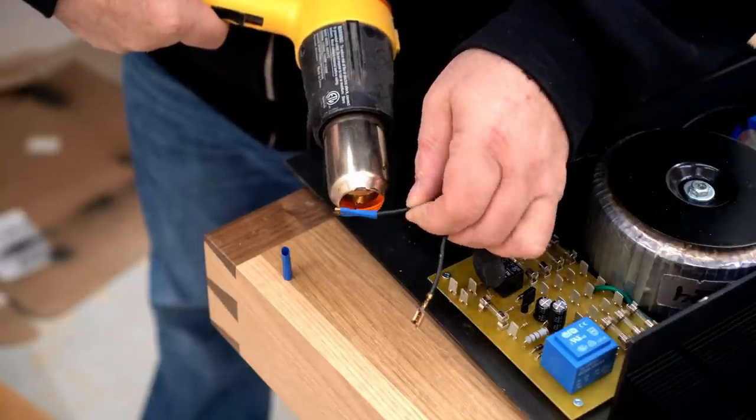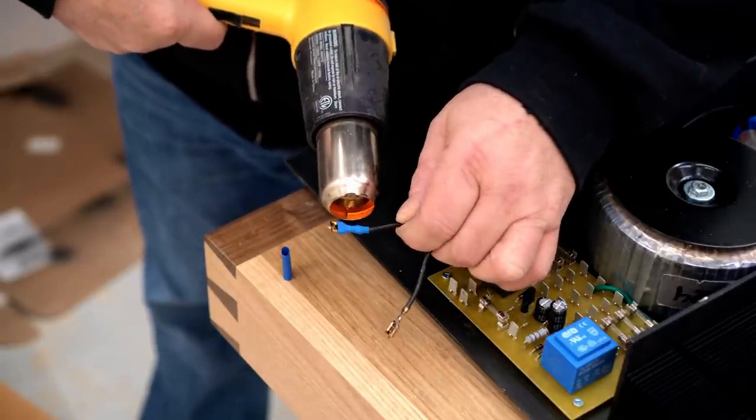These two wires are coming from the transformer and they connect to the output of the soft start.